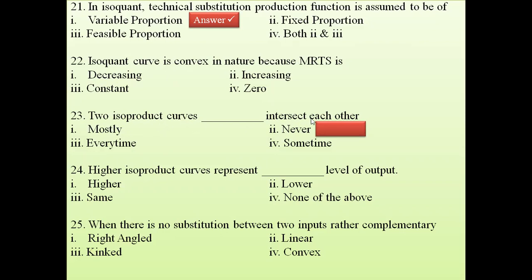Question 23: Two isoproduct curves — do they intersect each other? This is a very common question. If you know what an isoproduct curve is, you can easily answer: two isoproduct curves never intersect each other. The answer is never intersect with each other.